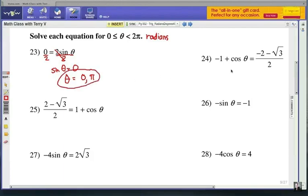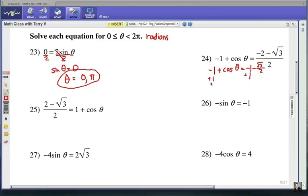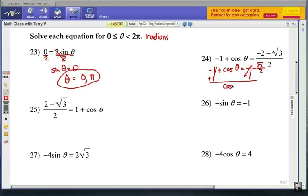Number 24. We're going to have to simplify this fraction over here on the right side, and remember that negative 2 is being divided by the 2, and so is this radical 3. That 2 applies to both parts. So let's rewrite this, kind of simplify it a little bit. Negative 1 plus cosine theta equals negative 2 divided by 2, that's negative 1, and negative radical 3 divided by 2, so negative radical 3 over 2. If we add 1 to each side, that will cancel out the ones on both sides. So here's what we have: cosine theta equals negative radical 3 over 2.